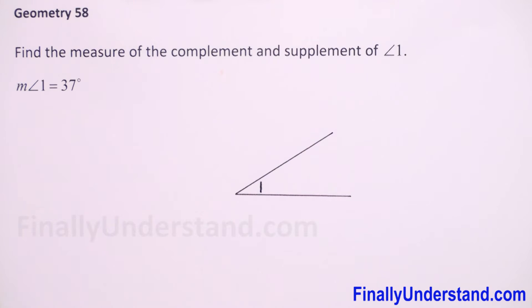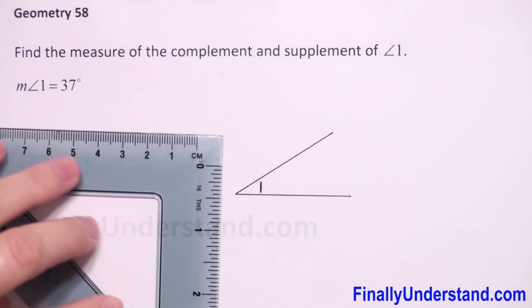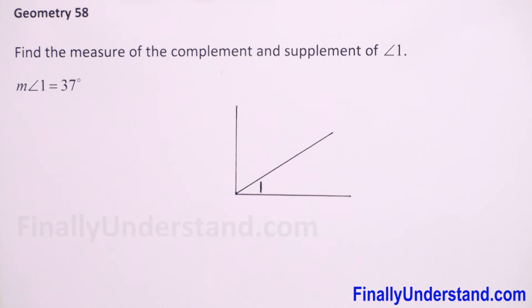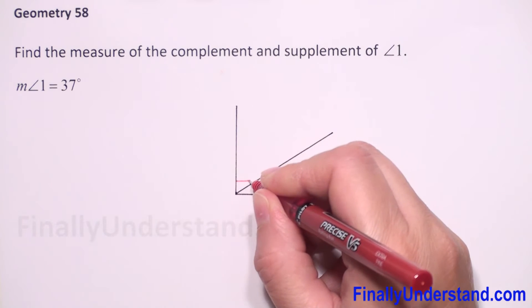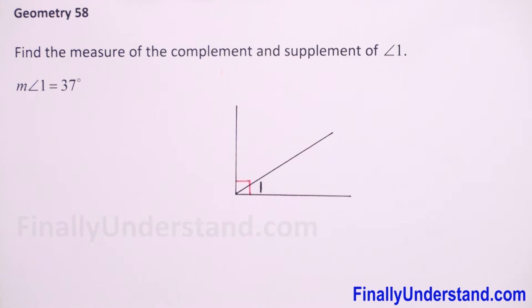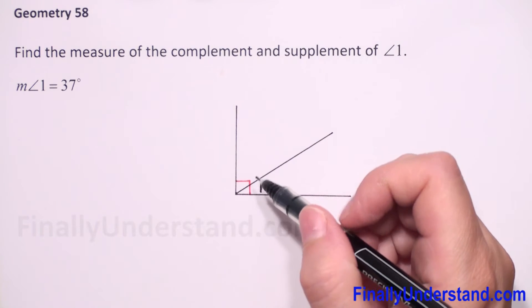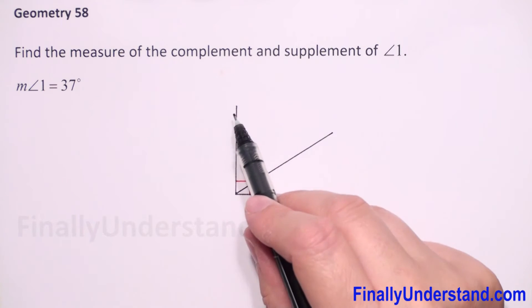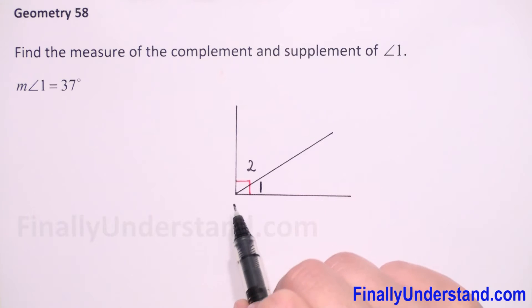First, we have to find the complement of this angle. We know that two angles are complementary if the sum of their measures is 90 degrees. 90 degrees is a right angle, so let's draw this right angle. This is our 90-degree angle, and the complement of angle one — let's call it angle two.